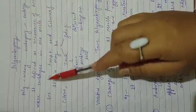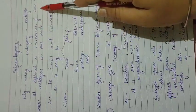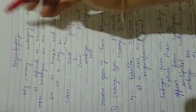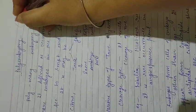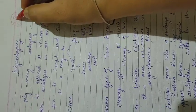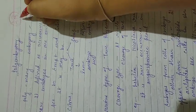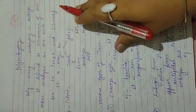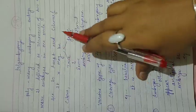Polyembryony is defined as the occurrence of two or more embryos in one ovule. In a single ovule there is formation of many embryos, which is polyembryony. You have seen this in citrus plants like lemon and orange.